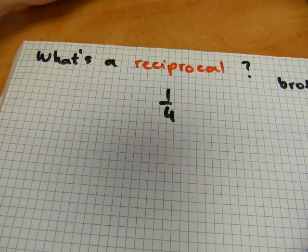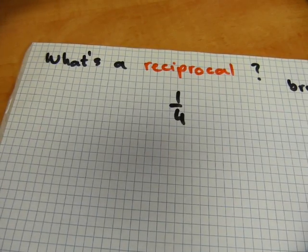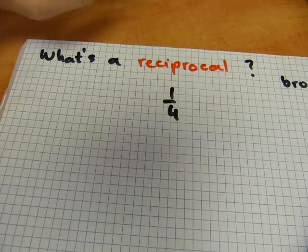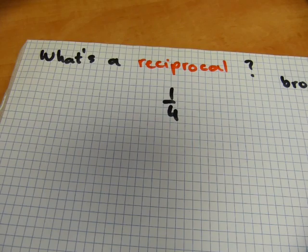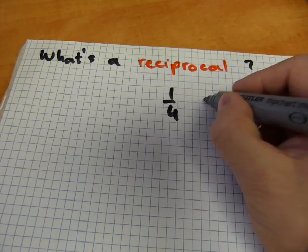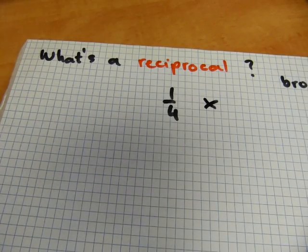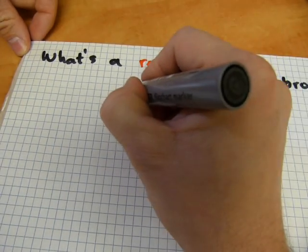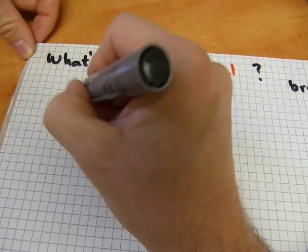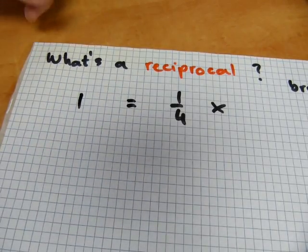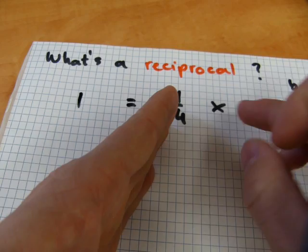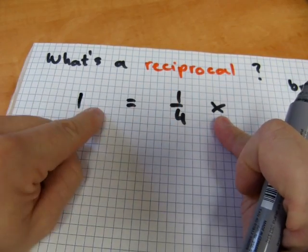By definition, reciprocal means that two numbers are reciprocal if their product is one. The product means the business of multiplication. And is one, that's how it's written. So two numbers are reciprocal if the product is one.